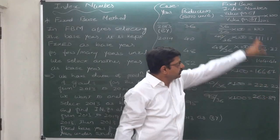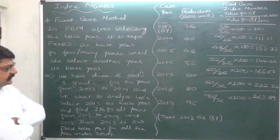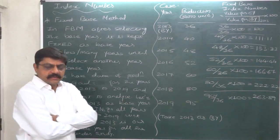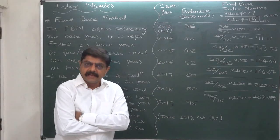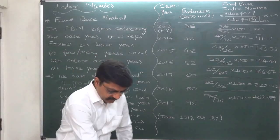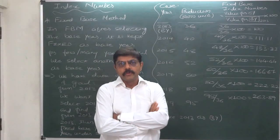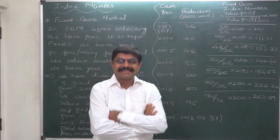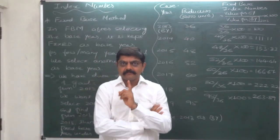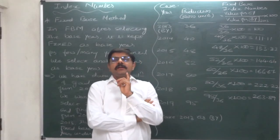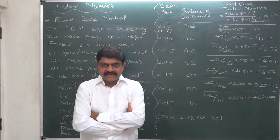All these are percentages with respect to 2013 — production in 2013 is equivalent to 100 percent, and these are the production index numbers compared to 2013. This is the fixed base method: the base year remains fixed for all the years under consideration while calculating index numbers. I hope this proves to be a very useful lecture and the concept of fixed base method is now clear. Don't forget to like, subscribe, and suggest my channel. Thank you very much.